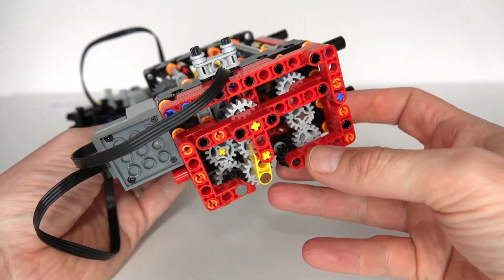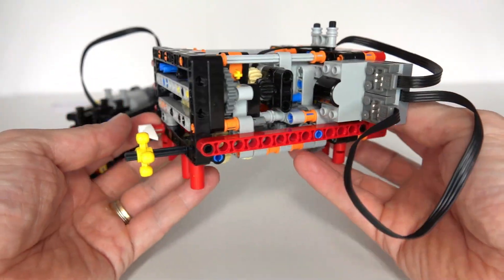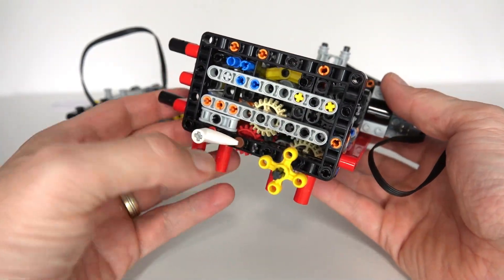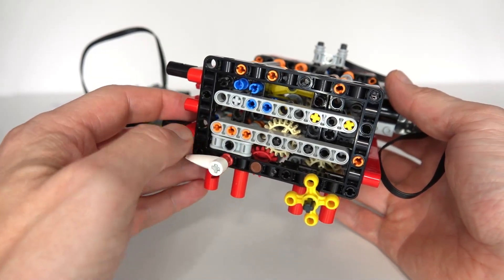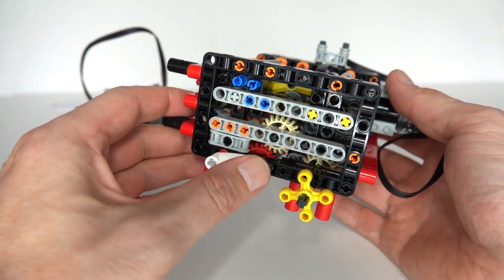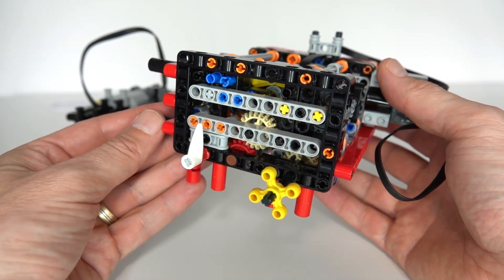In the case of this gearbox that I presented a couple of weeks ago, when the motor is going forwards we're simply driving the output, and when the motor goes backwards we've got it changing gears between four different gears—three forward gears and one reverse gear.